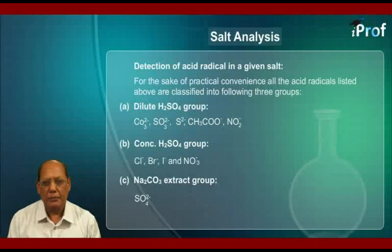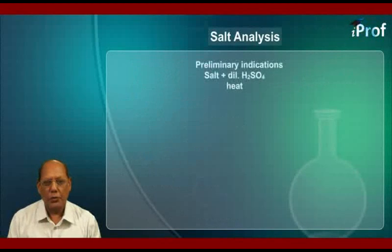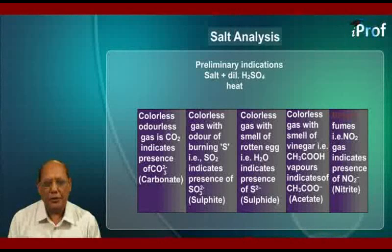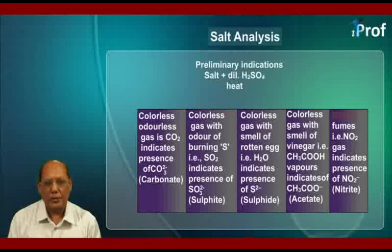Let us study them one by one. We begin with Group A: the Dilute H₂SO₄ group. The preliminary indications are given in the following table. We take a salt, add dilute sulfuric acid in a test tube, and heat it. The observations can be any of the following five, provided you are given a single salt.